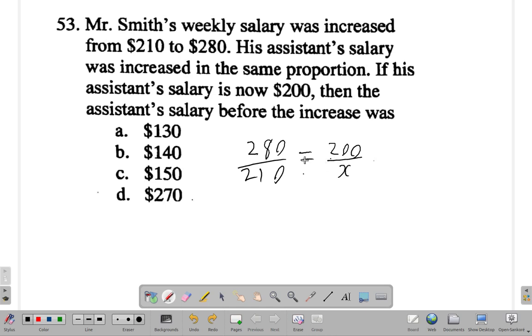You could do the cross multiply routine and say 280 by x is equal to 200 by 210. Then if you divide both sides by 280, you would get x equal to 200 by 210 divided by 280.